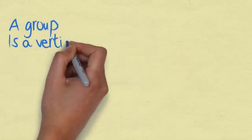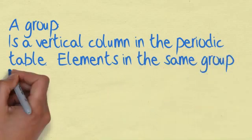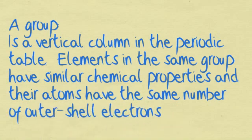A group is a vertical column in the periodic table. Elements in the same group have similar chemical properties and their atoms have the same number of outer shell electrons.